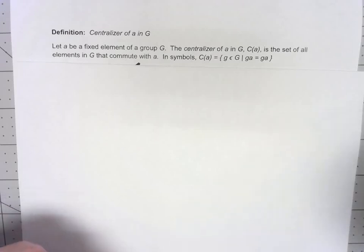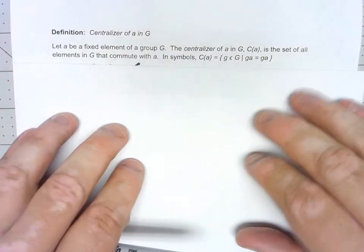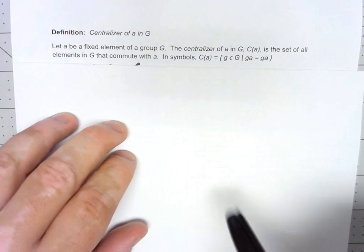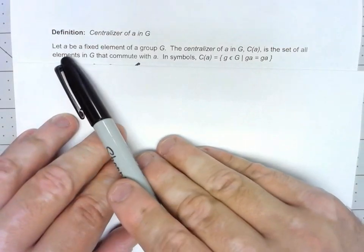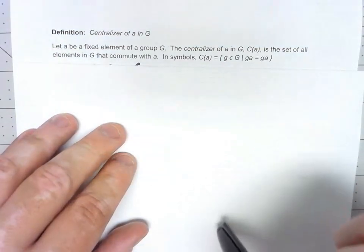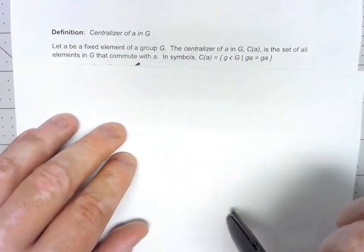The final definition we want to look at this week is the centralizer of an element in a group. So we pick one particular element of the group, A in general, and we look at the things that commute with that element.